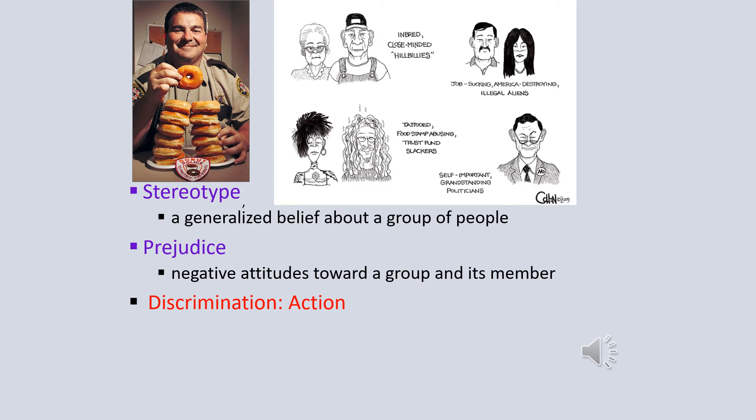As I said, a stereotype is an overgeneralized belief about a group of people. A stereotype can be good or bad. Like, we associate police officers with donuts. That's not a bad thing. It's just an overgeneralized belief that we have. If those beliefs turn negative, that then becomes a prejudiced attitude. If someone takes action on a negative attitude that they have, that would be considered discrimination.